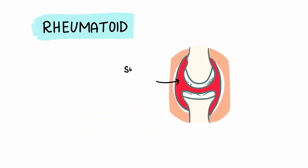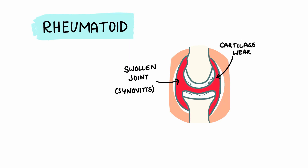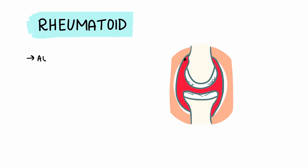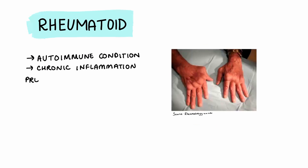Let's start off with rheumatoid arthritis. This is an autoimmune condition that causes chronic inflammation of a joint and its components, including the tendon sheaths, bursa, etc. Since this is an autoimmune condition, it usually presents as a symmetrical distal polyarthropathy.